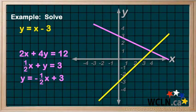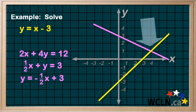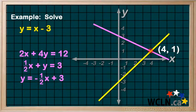Where is our solution to this system of equations? Yes, it's right there where they intersect. 4 comma 1. At this point, or solution, both lines pass through the exact same point.